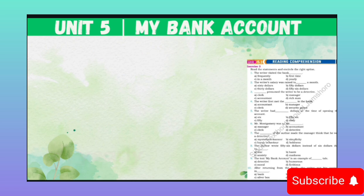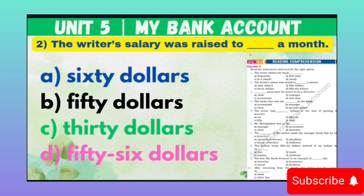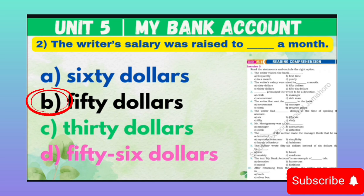MCQ number 2: The writer's salary was raised to blank dollars a month. It means musannif ki kitni tankha mahana barha di gayi. Option A: 60 dollars. Option B: 50 dollars. Option C: 30 dollars. Option D: 56 dollars. Correct option is B — 50 dollars.